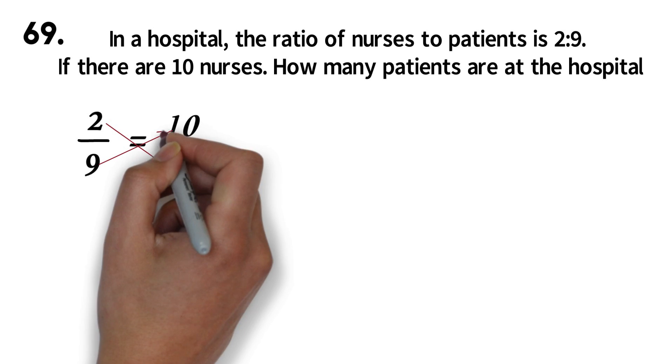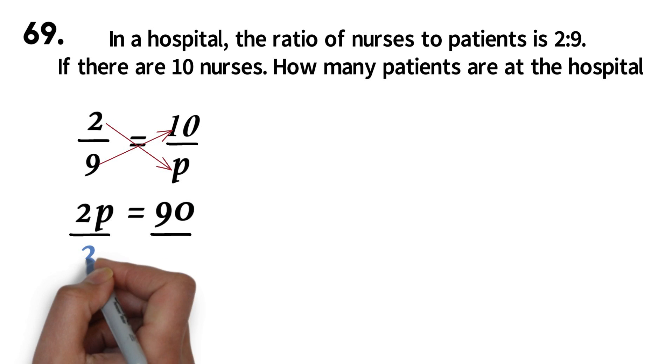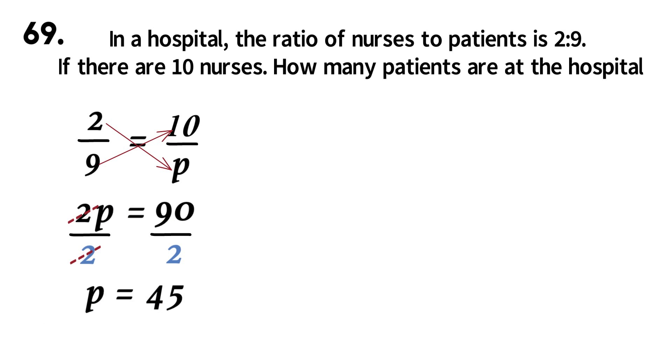We can now solve for p. First, cross multiply. So we will have 2p equals 9 times 10, which is 90. We divide both sides by 2. The 2 will cancel out. 90 divided by 2 is 45. So there are 45 patients in the hospital.